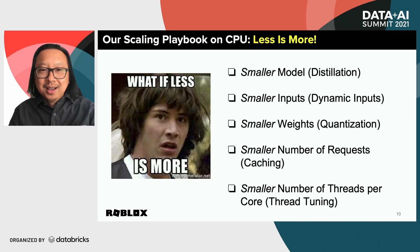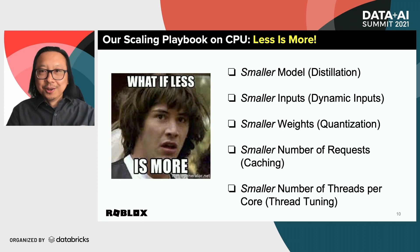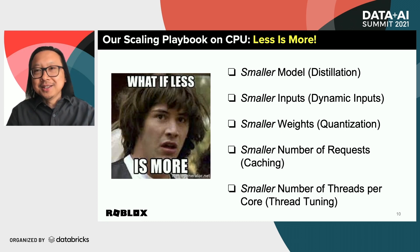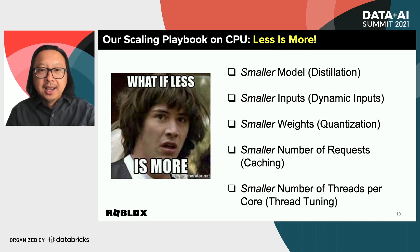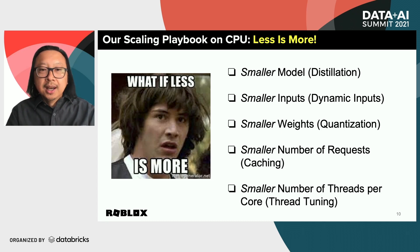From a high level, there was a unifying theme in all of our scaling work, and that was 'less is more.' In other words, we made things faster by making them smaller. I'm going to take you through five examples of doing just this, which ultimately increased our scalability — latency and throughput — by over 30x.